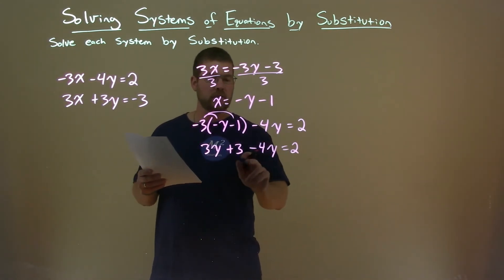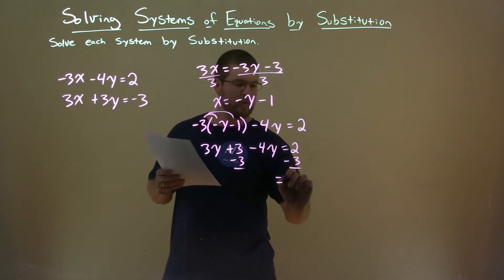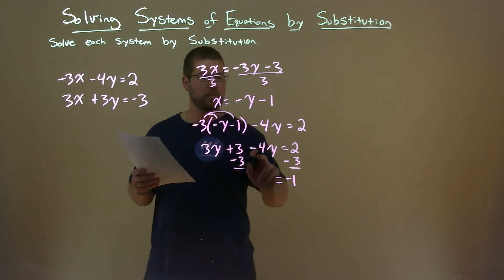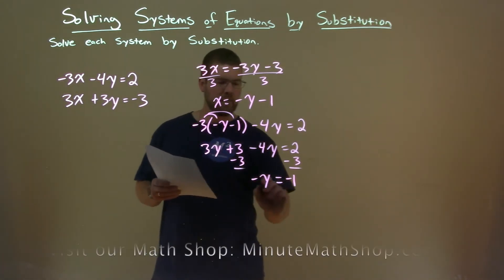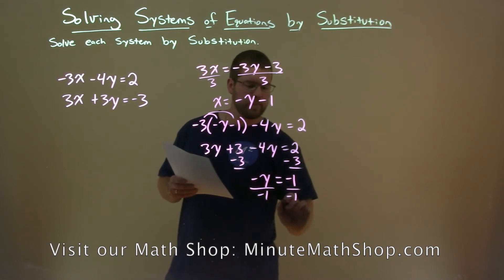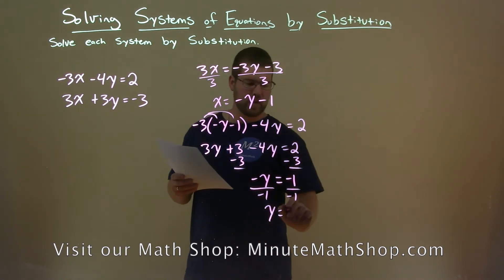From there, let's get our like terms together. 2 minus 3 here is negative 1. And 3y minus 4y is negative y, or negative 1y. Divide both sides by negative 1. And y equals negative 1 divided by negative 1, which is positive 1.